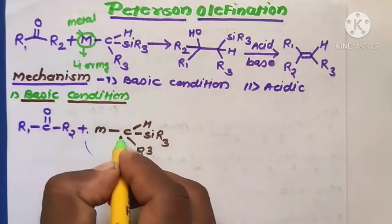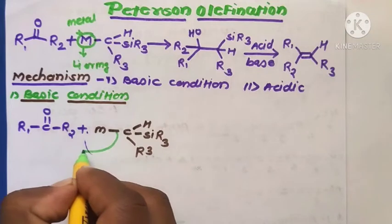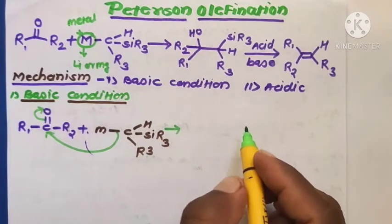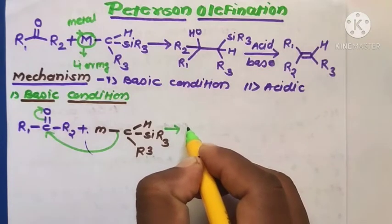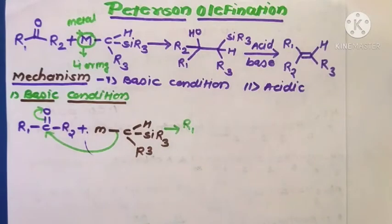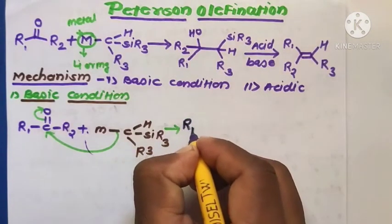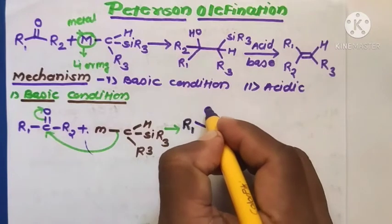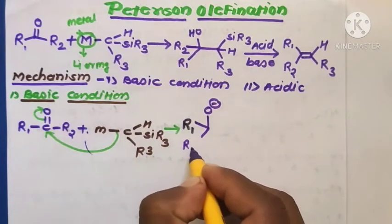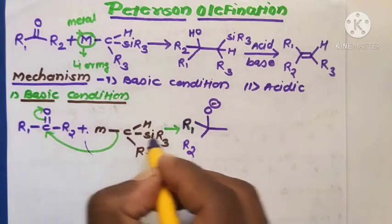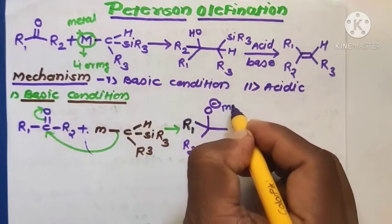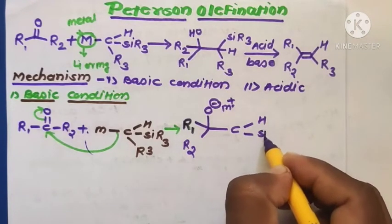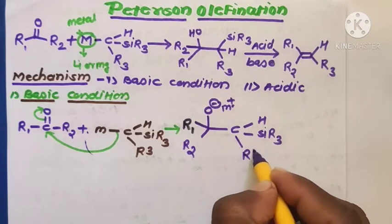The reaction forms an intermediate molecule containing R1, R2, an O minus (alkoxide) ion with M plus counter ion, a carbon atom bonded to H and Si(R3) groups. This is the key tetrahedral intermediate formed by nucleophilic addition of the alpha-silyl carbanion to the carbonyl compound.